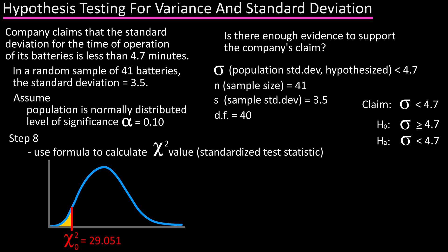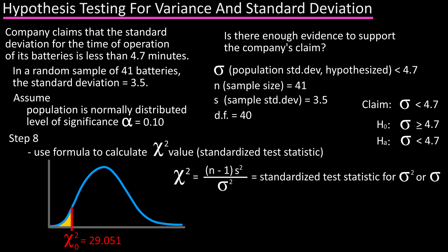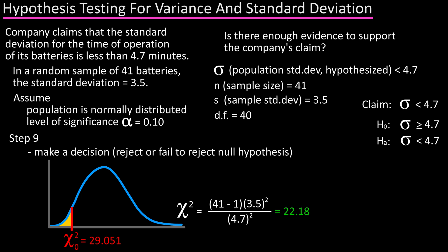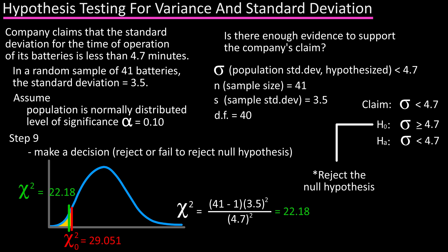Step eight is to use the formula and calculate the chi-square value. Using the formula, we have chi-square equals 41 minus 1 times 3.5 squared divided by 4.7 squared. Calculating out, we get chi-square equals 22.18. Step nine is to make a decision to reject or fail to reject the null hypothesis. On our graph, the standardized test statistic does fall in the rejection region, as chi-square (22.18) is less than chi-square naught (29.051), the critical value. So we reject the null hypothesis.